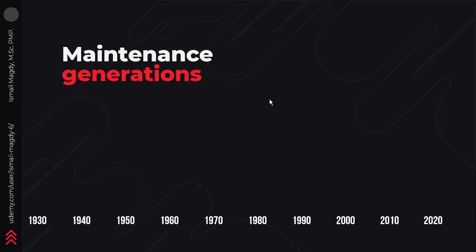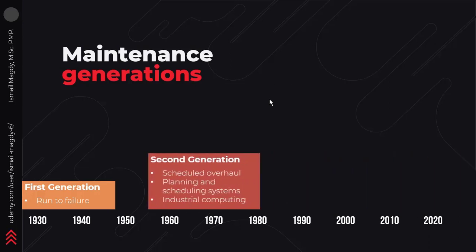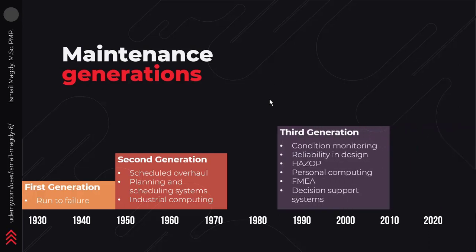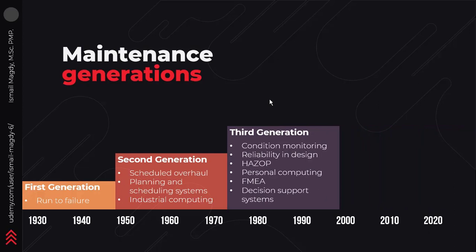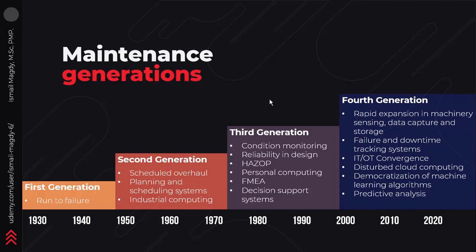Through the years, maintenance went through different generations. In the first generation, it was completely relying on corrective maintenance, which means the only task of the maintenance team was to wait for the equipment to fail and to start fixing after the failure had already occurred. In the second generation, people started realizing the importance of preventive maintenance, and scheduled time-based maintenance started to be adopted. In the third generation, preventive maintenance became more advanced — instead of just being time-based, we started to have condition-based maintenance, in addition to reliability-centered maintenance, which we are going to explain in detail in the next chapters. And finally, now we are in the fourth generation of maintenance, which relies on big data and the Internet of Things, trying to eliminate all defects from their source through root cause analysis.